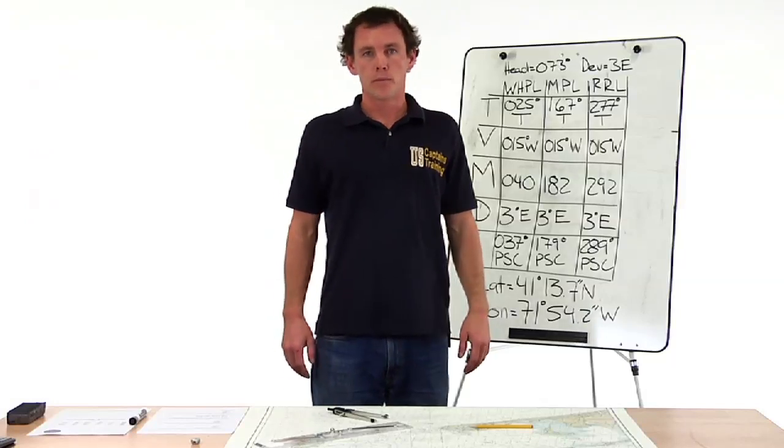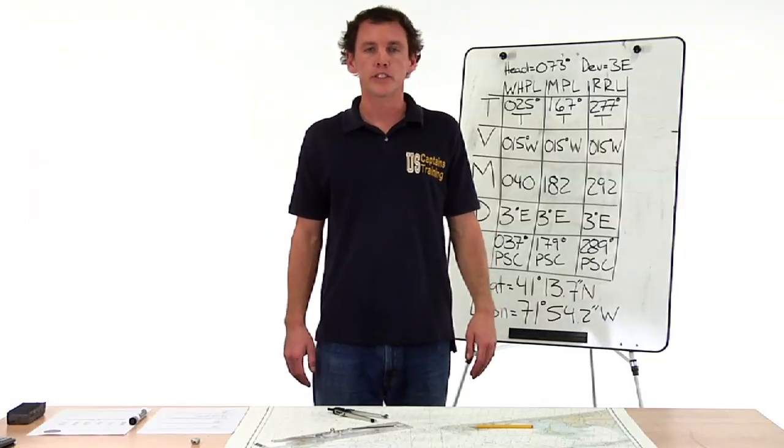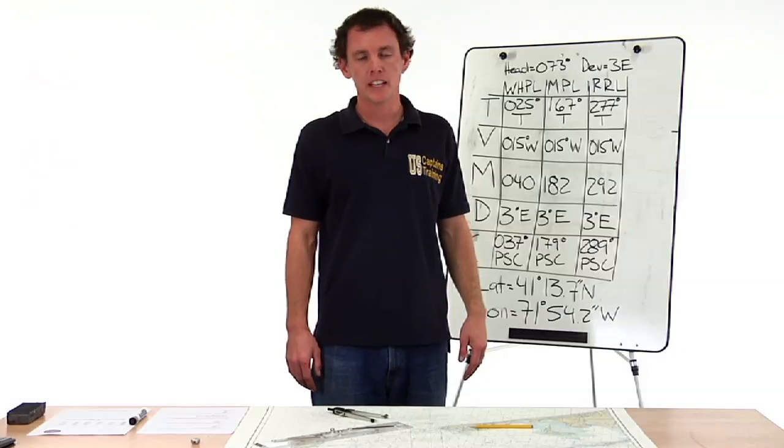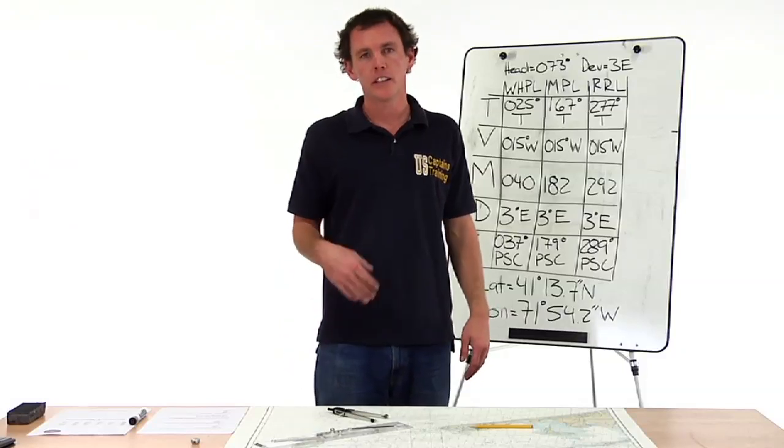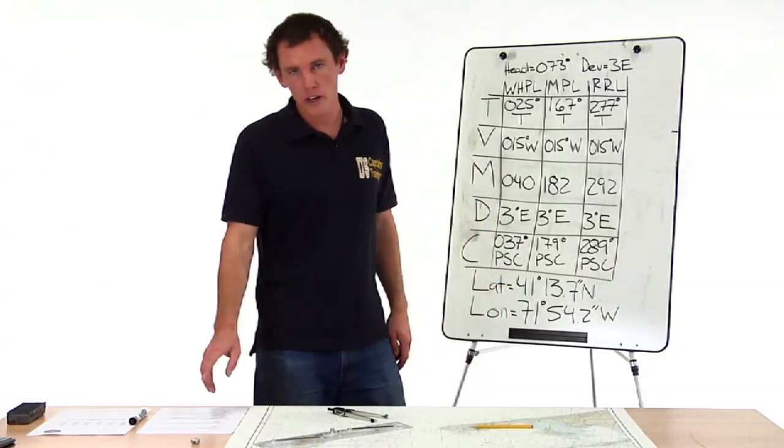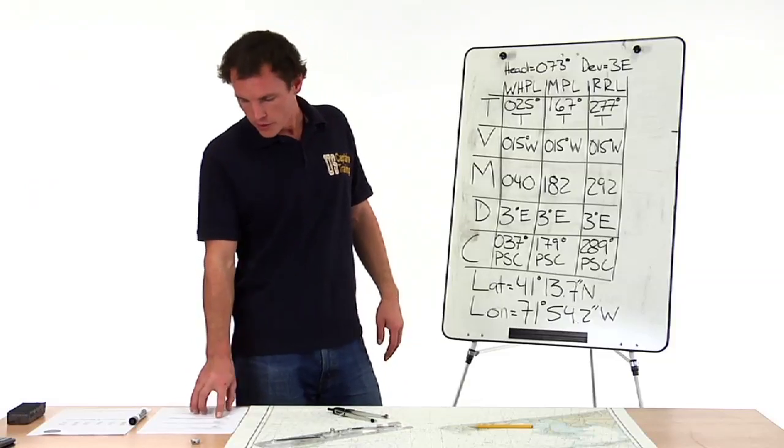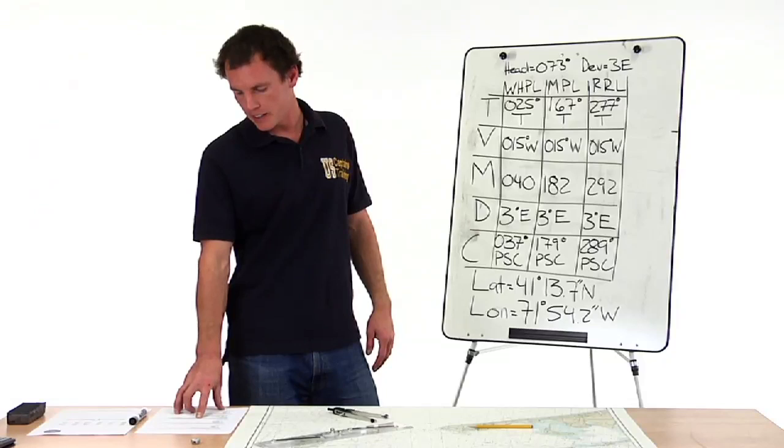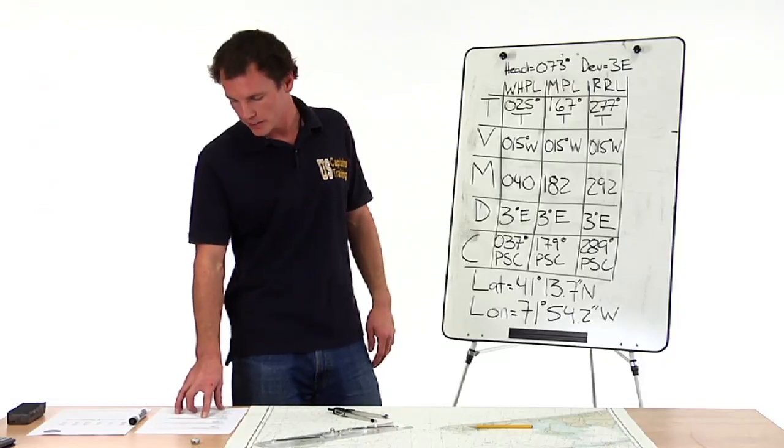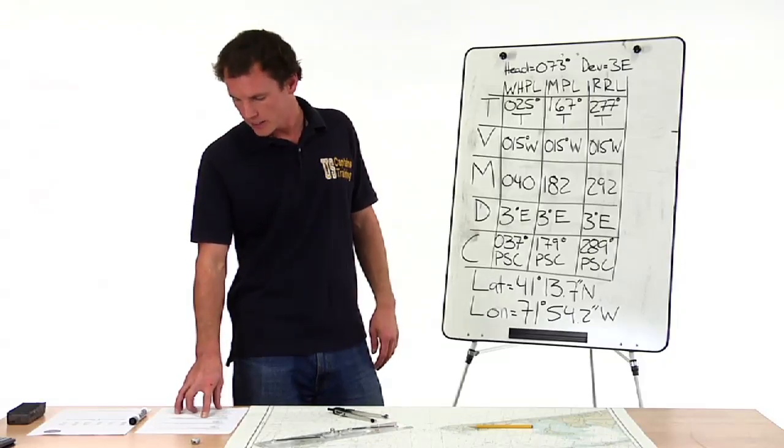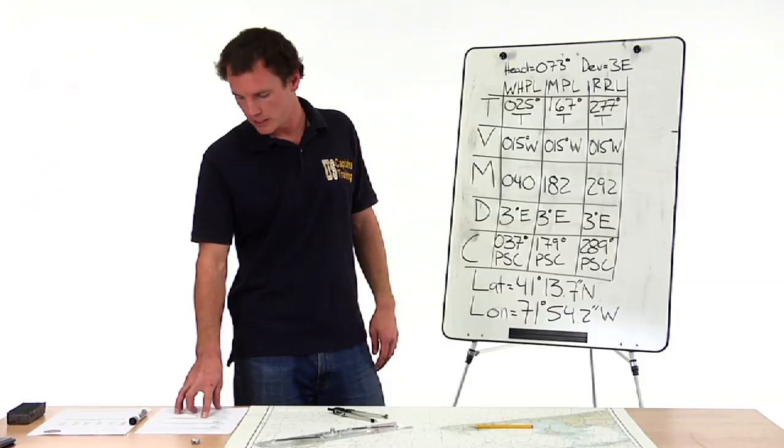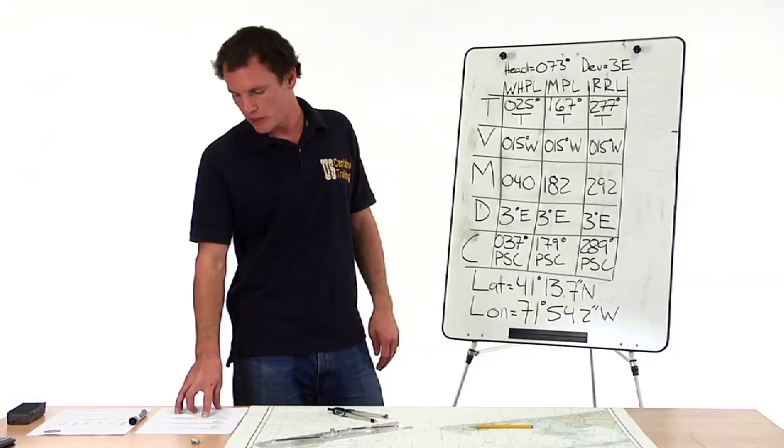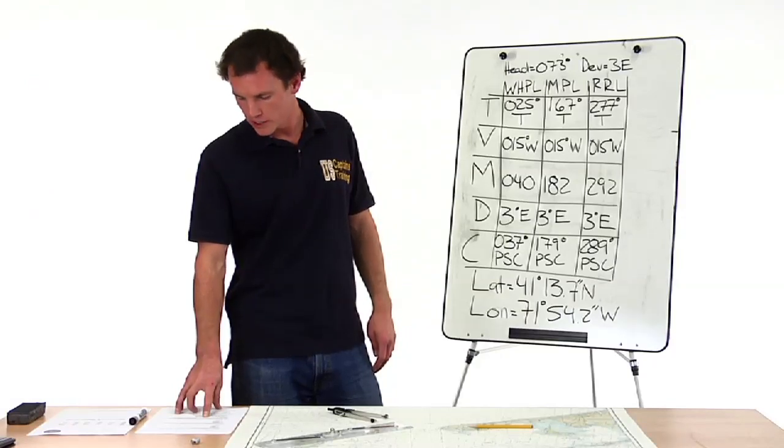This is a three point fix problem. The purpose of this problem is to triangulate your position based on three bearings and your heading. So the question reads, you're on course 73 degrees per standard magnetic compass when you take the following bearings: Watch Hill Point Light 37 degrees PSC, Montauk Point Light 179 degrees PSC, Race Rock Light 289 degrees PSC. What's your position?